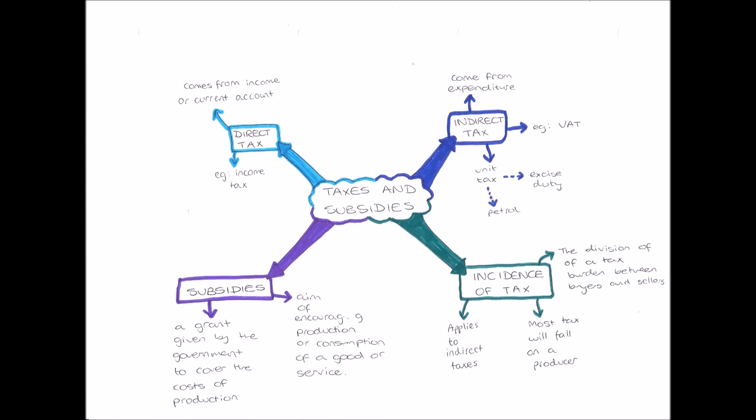But if the good being sold is price inelastic, then it is likely that the incidence of tax will fall on the consumer. This is because if there were an increase in tax by 10%, the company knows that they can increase their whole price by 10% and demand won't change that much because the good is inelastic. So in this case, the consumer is paying for most of the tax, therefore the incidence of tax, or the burden of tax, is on the consumer.